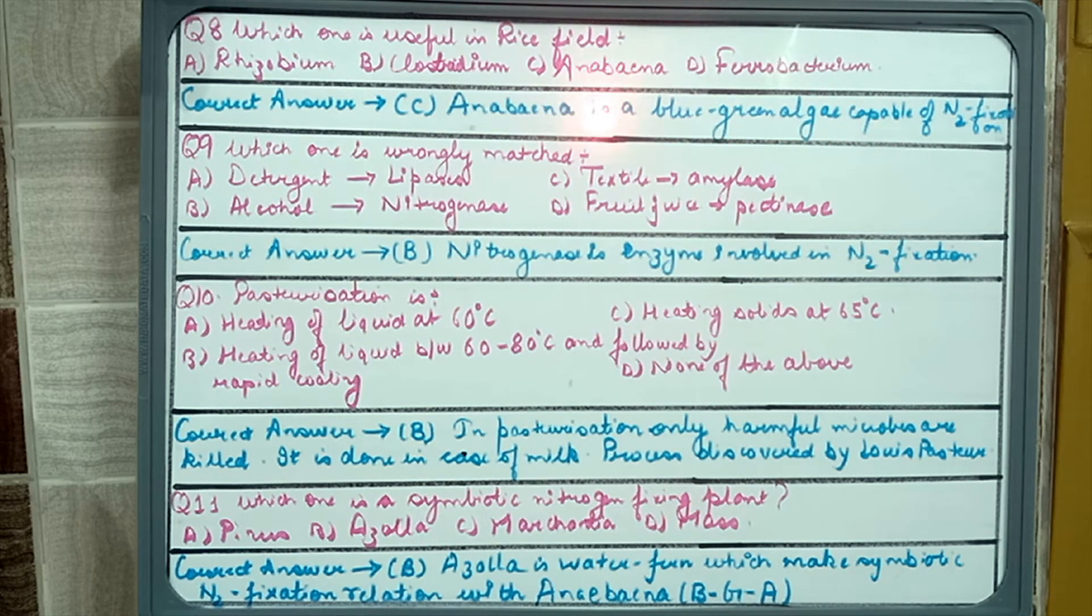Whereas Anabaena is a blue-green algae which is capable of nitrogen fixation. This algae is used in rice field because the blue-green algae have specialized cells which are known as heterocysts which help in nitrogen fixation.